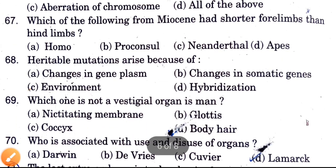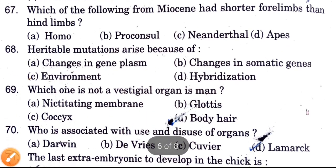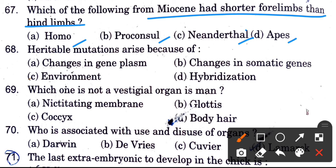Which of the following from Miocene had shorter forelimbs than hindlimbs? Options are Homo, Proconsul, Neanderthal, and Abs. The answer is Abs.